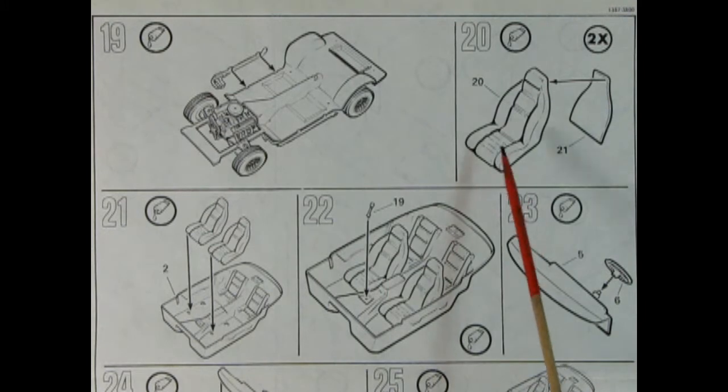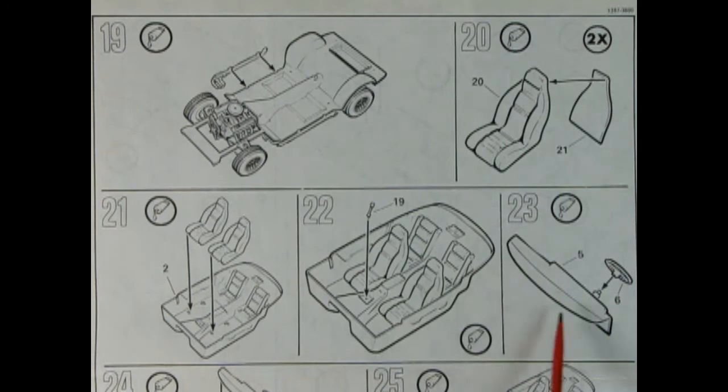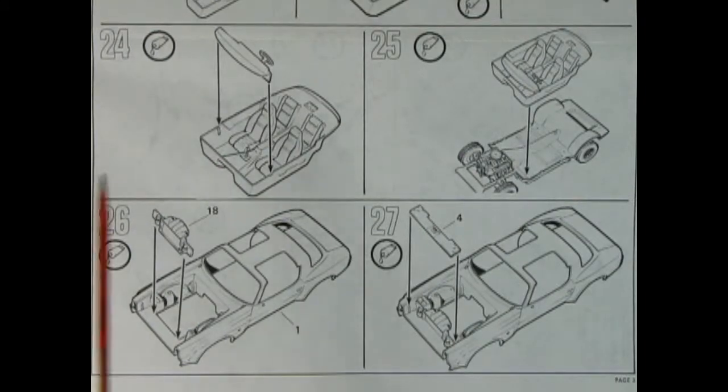Panel 20 shows our seat front and our seat back gluing together. You do this twice then you drop both of the front bucket seats into the interior tub and drop the shifter into place. Then we've got our nice dashboard and steering wheel which glue all together here. When you get into panel 24 the dashboard drops into place into our tub.